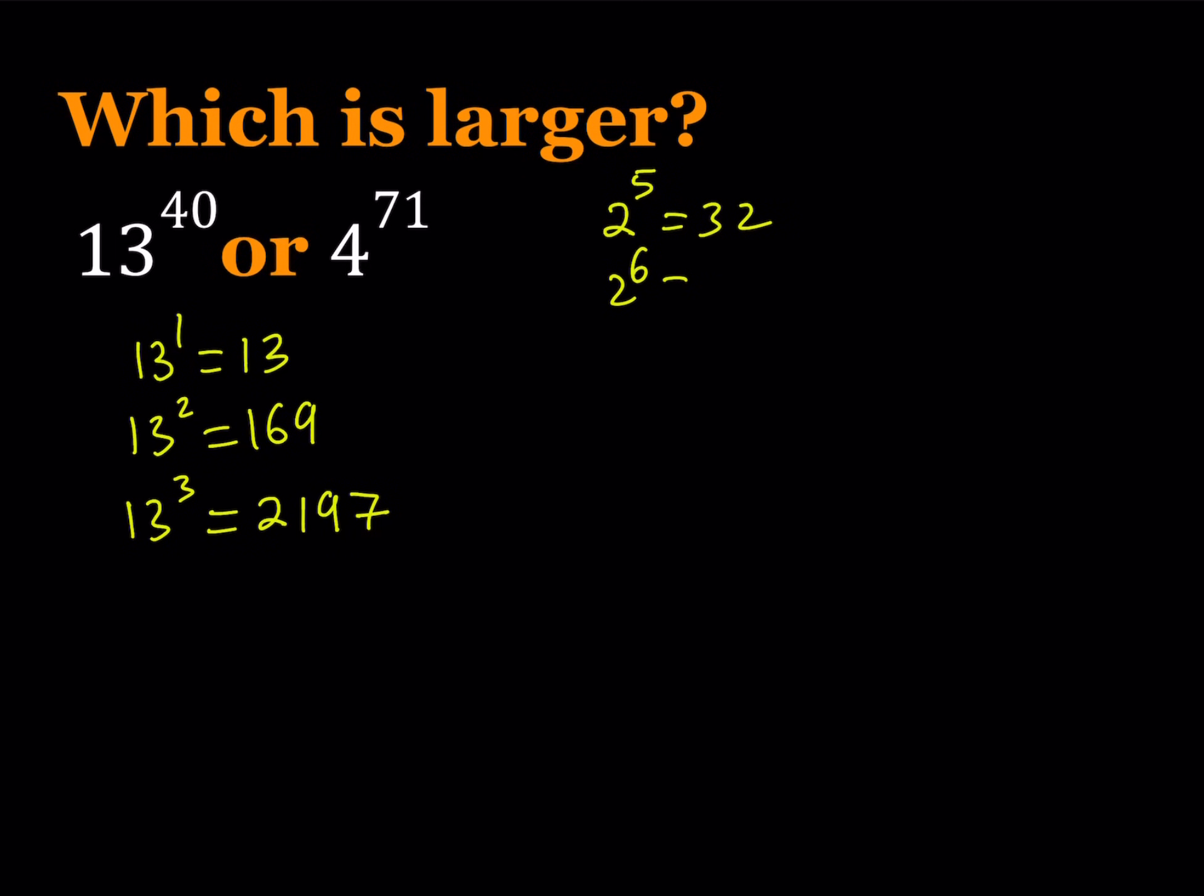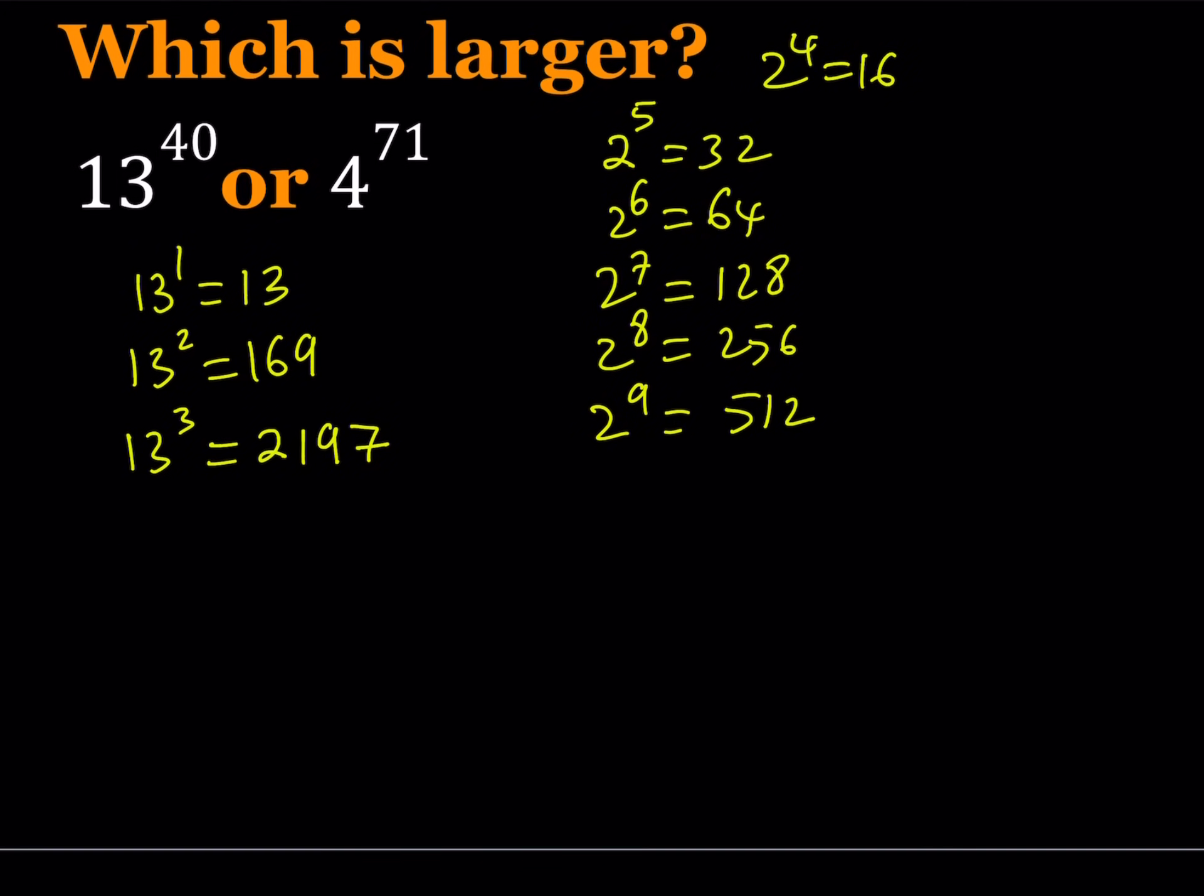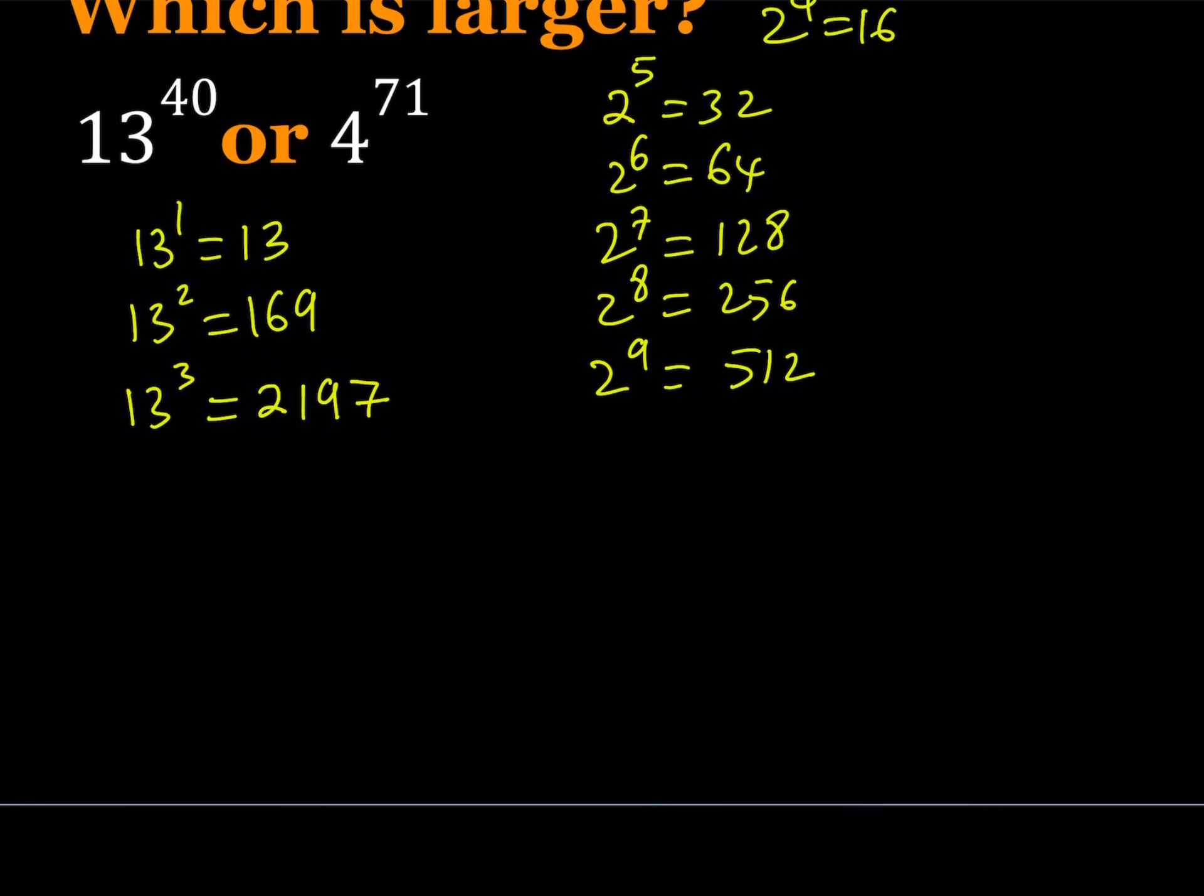It's 32, and then 2 to the 6th you're just going to double it: 64. Now we're looking at 13, and 2 to the 4th power is 16, so it's kind of close to 13. We could possibly use that. But let's continue. 2 to the 7th power is 128, 2 to the 8th is 256, and 2 to the 9th is 512. So are we getting closer to 2197 or 169 or 13? Let's check it out. 2 to the 10th is 1024.